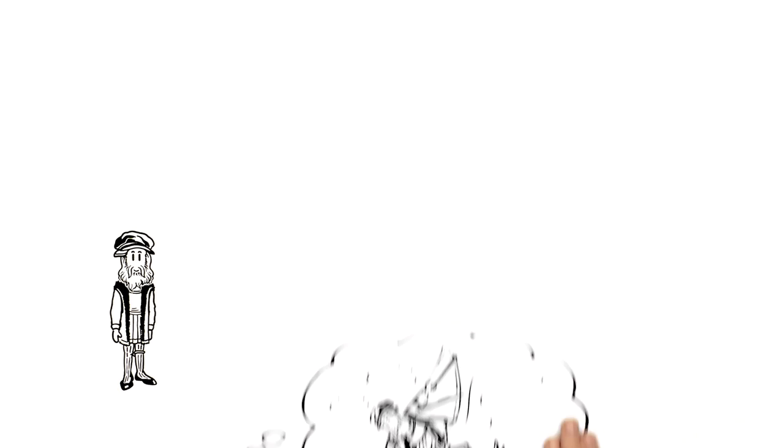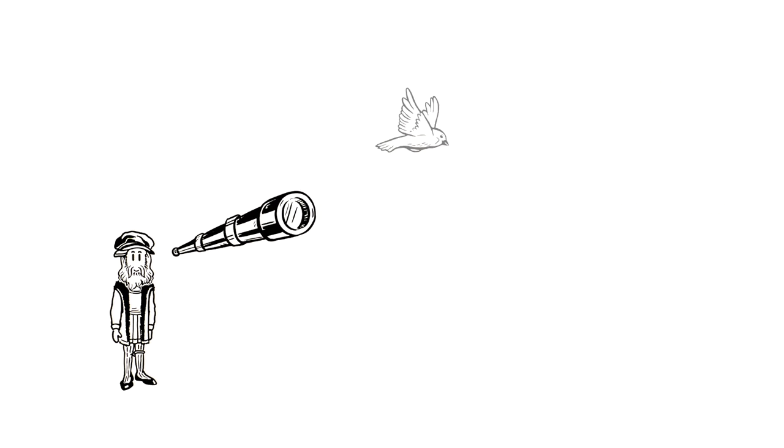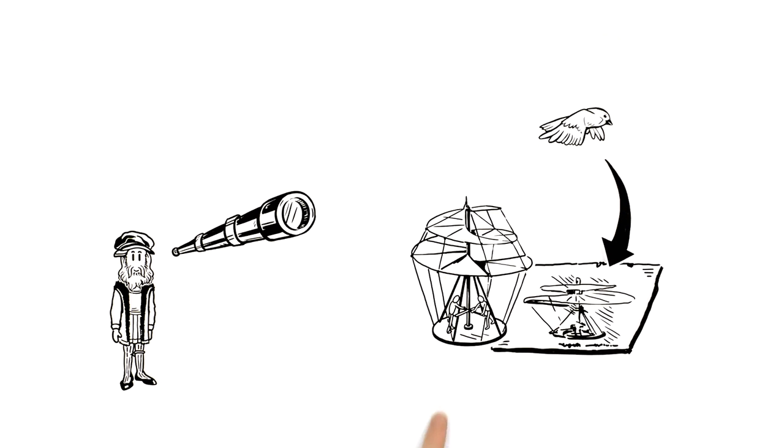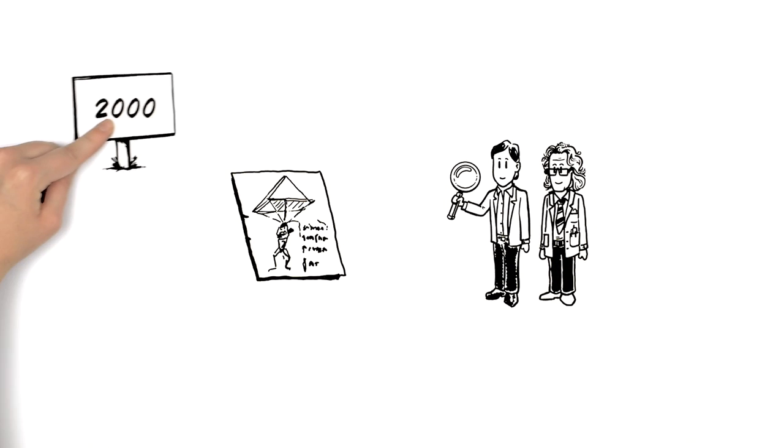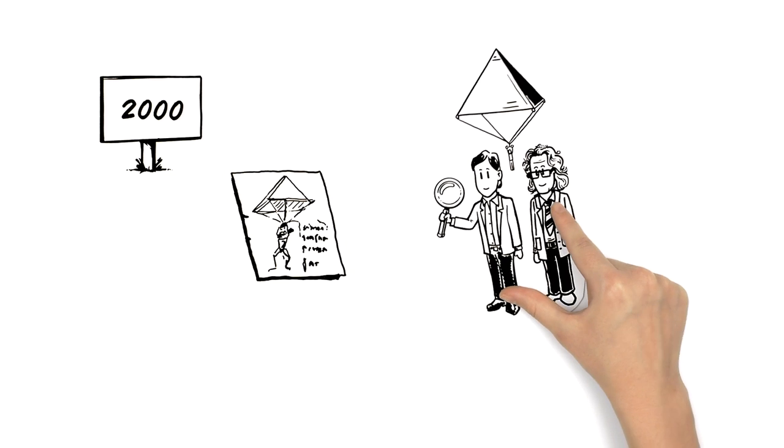One of Leonardo's greatest dreams was to fly. By observing the movements of birds, he invented the very first flying machines. A parachute was later assembled by scientists in the year 2000 using his original design. And it worked.